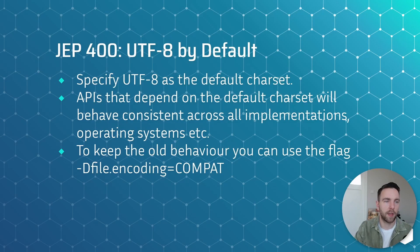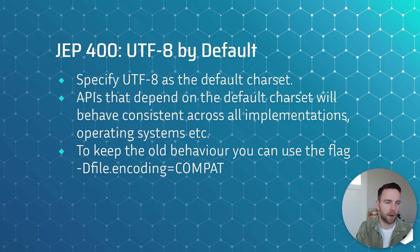Then there's JEP 400: UTF-8 by Default. UTF-8 is an encoding standard, and with this JEP it now specifies UTF-8 as the default charset. APIs that depend on the default charset will now behave consistently across all implementations and all operating systems. If you want to keep the old behavior, you can use the flag -Dfile.encoding=COMPAT, or you could always just pass a specific charset you want to use to the relevant APIs.